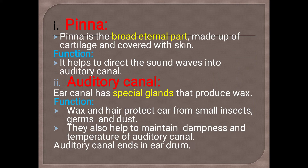The external or outer ear consists of three parts: pinna, auditory canal, and tympanum or eardrum. The pinna is a broad external part made up of cartilage and is covered with skin. Cartilage is the movable soft bone. The function of the pinna is to direct sound waves into the auditory canal, as it is shaped just like a funnel.